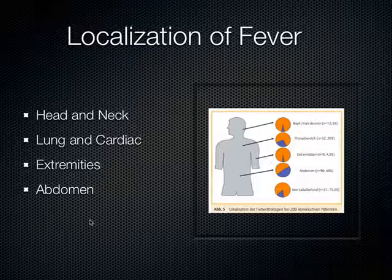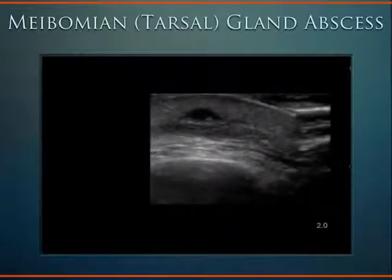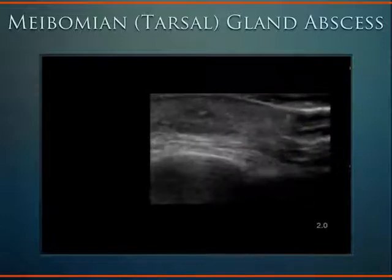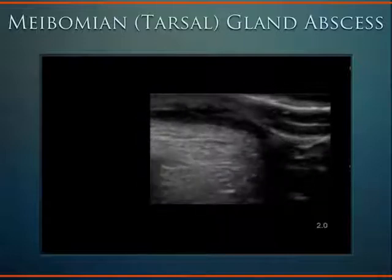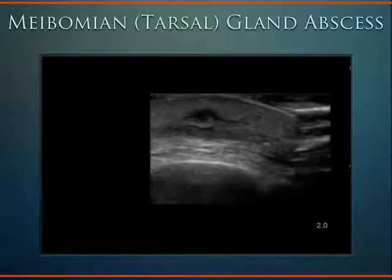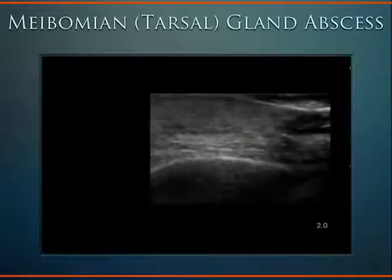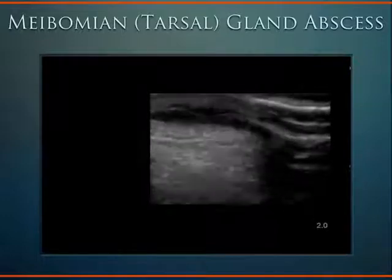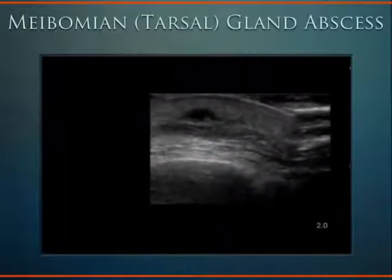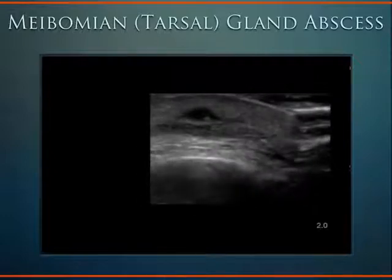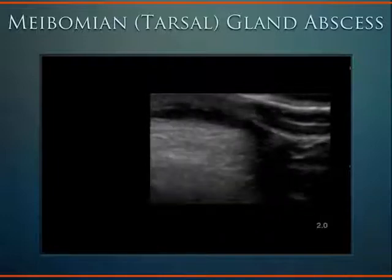We're going to go through the head and neck, lung, cardiac, extremities, and abdomen searching for a fever source. Starting at the head, here's an example of a meibomian gland abscess. The meibomian glands — sometimes called tarsal glands — are a special kind of sebaceous gland along the rim of the eyelids inside the tarsal plate. They make meibum, an oily substance that prevents evaporation of the eye's tear film, prevents tear spillage onto the cheek, and makes closed eyelids airtight. There are about 50 of these glands in the upper eyelids and 25 in the lower, named after Heinrich Meibom, a German physician from the 1600s.